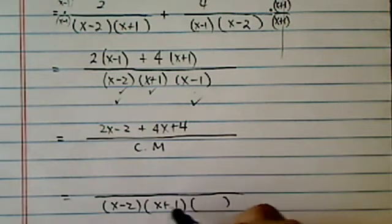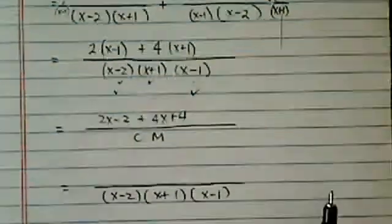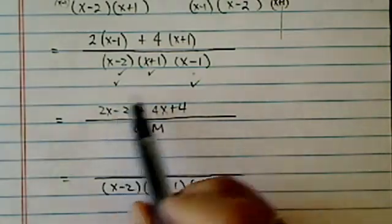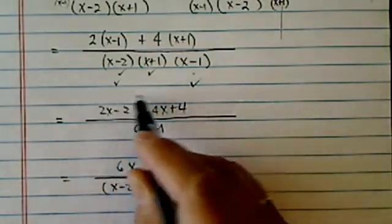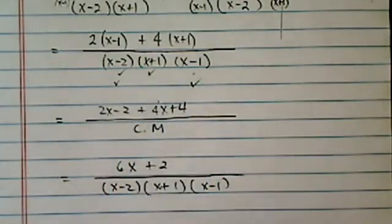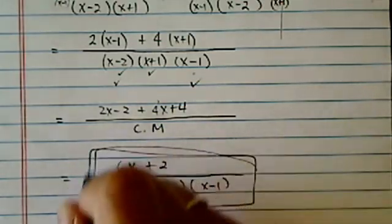x minus two, x plus one, x minus one. I write cm there to save myself a little time. So I have six x, gather those two, and plus two. And that's my final answer.